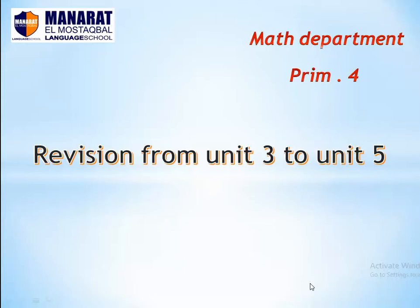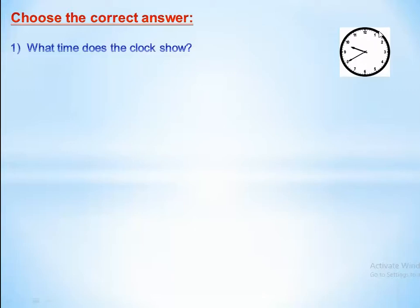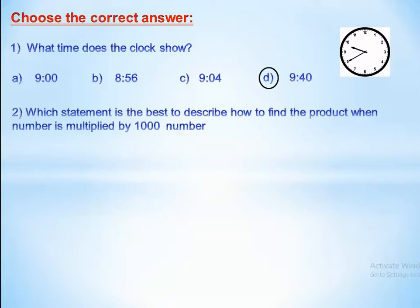Hi, dear students. Today we are going to revise from Unit 3 to Unit 5. First question: choose the correct answer — what time does the clock show? The small hand is between 9 and 10, so it's 9. Now let's count the minutes: 5, 10, 15, 20, 25, 30, 35, 40. That means the time is 9:40.